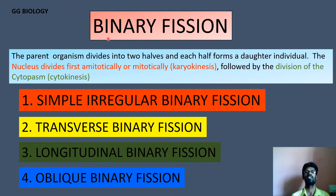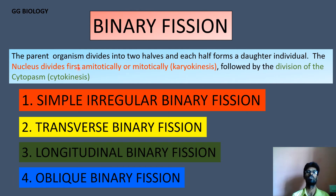First let us discuss binary fission. As the name indicates, 'bi' stands for two, and fission means cutting or division. So binary fission is defined as: the parental organism divides into two halves, whereby each divided half will act as a daughter individual. The nuclear division takes place mitotically and is followed by cytoplasmic division. It involves two important events: karyokinesis and cytokinesis — first the nucleus divides, followed by the cytoplasm, resulting in binary fission.